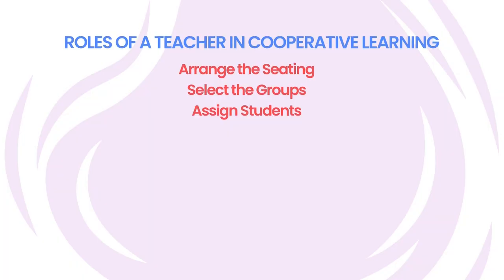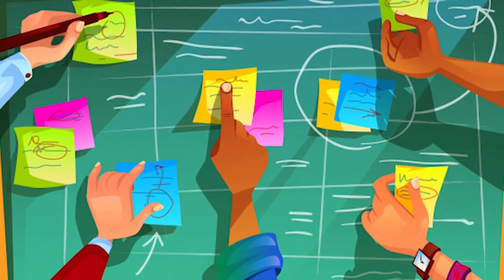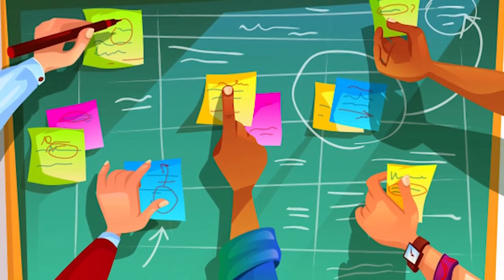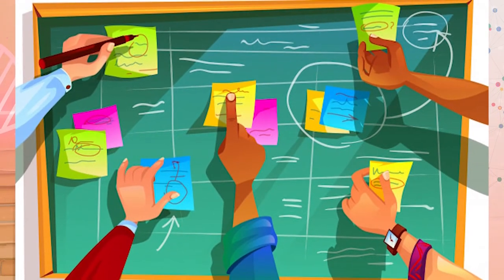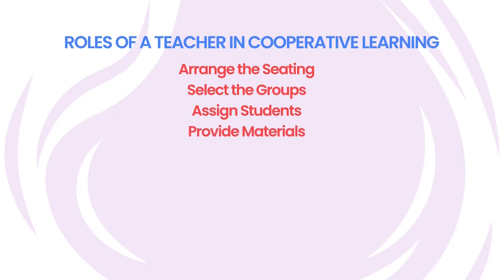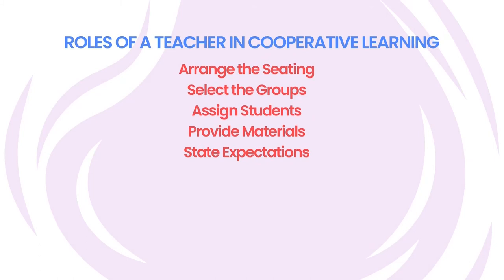Assign each student to a group. Research favors heterogeneous groups because the differences among members help the group function, increase self-esteem, and produce opportunities for peer support. Provide materials: when choosing materials, keep in mind what each student's role will be in the group. Depending upon the task, students can have the same material or each can have different material. State expectations: before giving students their task, make sure you state what your expectations are for the assignment. Be clear and provide specific examples and model appropriate behavior.